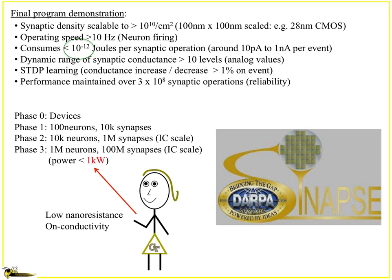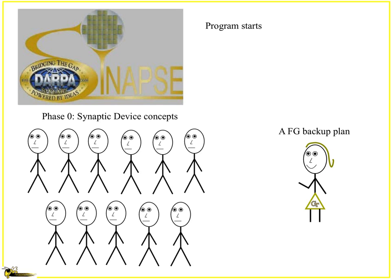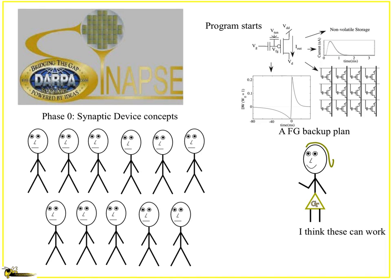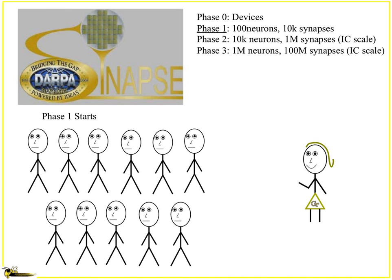So that's kind of what you're dealing with there. So the program starts and you have a bunch of people, and oh yeah, there's a floating gate backup plan. It's like, hey, by the way, this works.